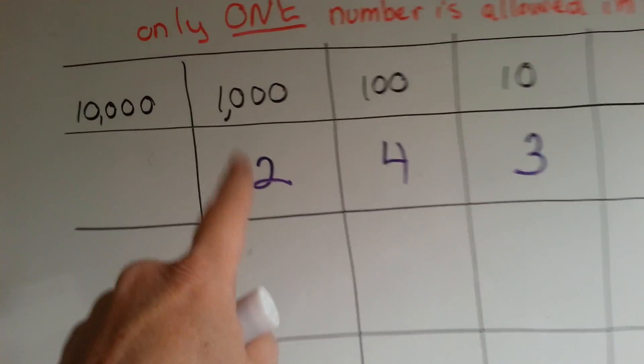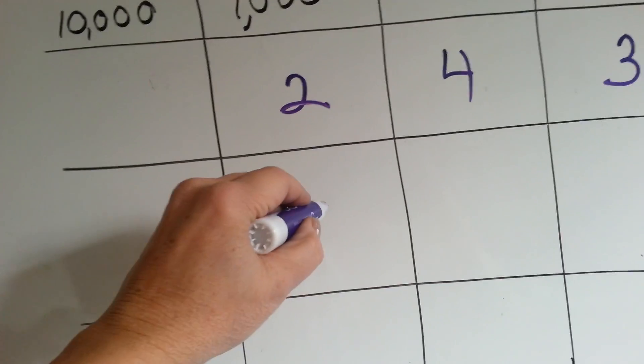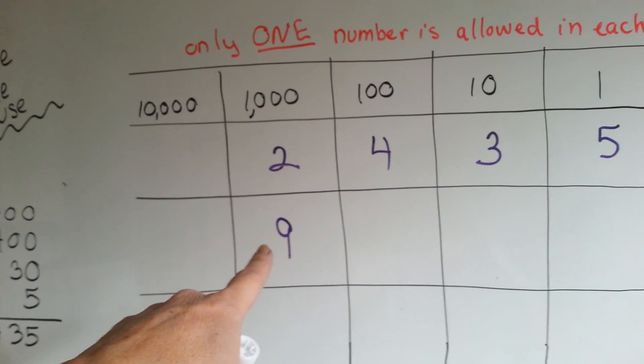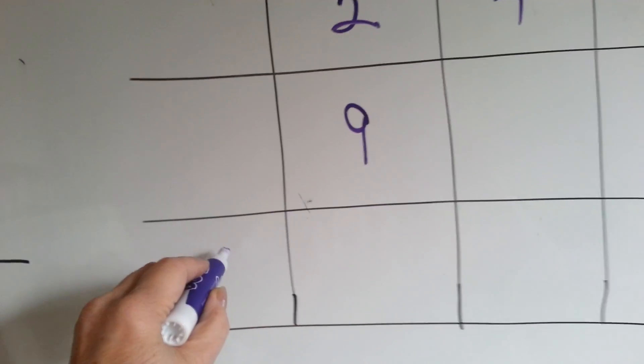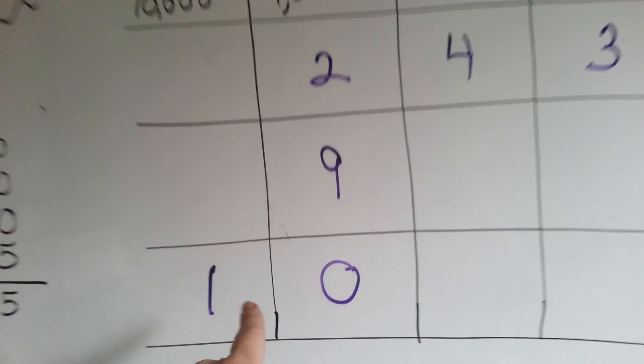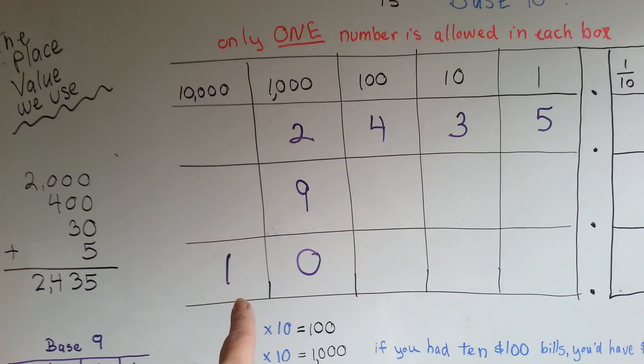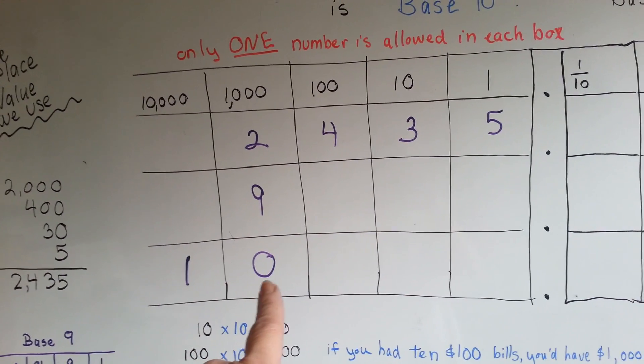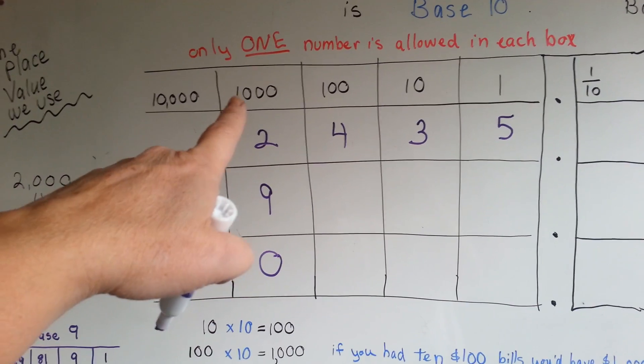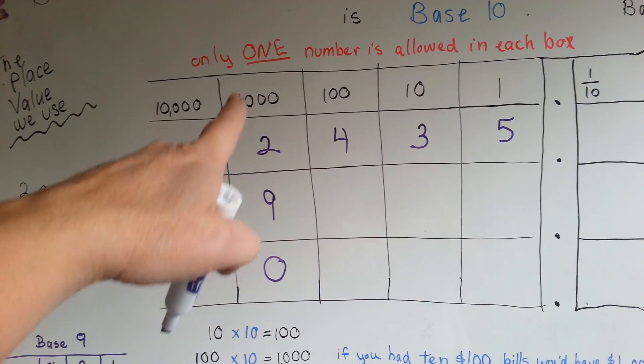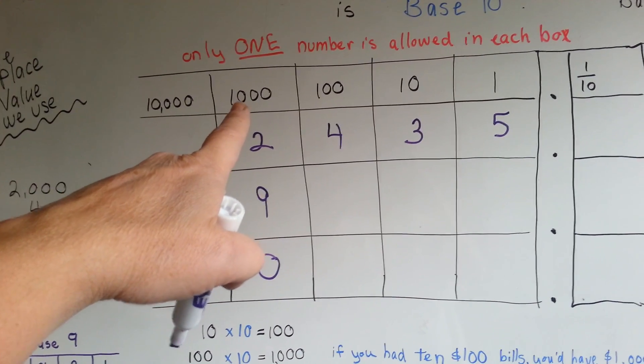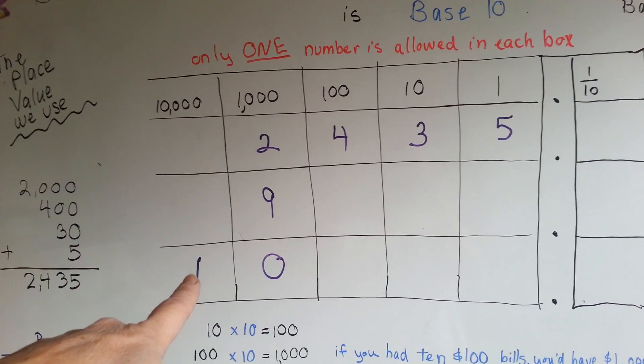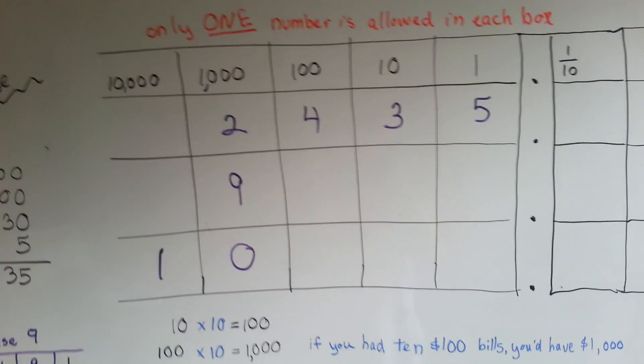So once this here got to nine, that's as high up as you can go. It can't go to ten. Because if you did, then it would look like this. Because only one number is allowed in each box. That means you'd have one ten thousand and zero thousands. You'd have ten thousand. See? It goes from nine thousand to ten thousand. So the one, that one ten thousand would be in that box. That's the way our base ten system works.